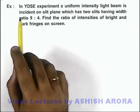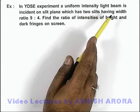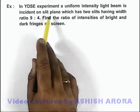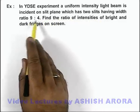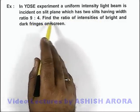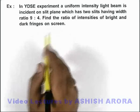In this example, we are given that in YDSE experiment a uniform intensity light beam is incident on a slit plane which has two slits having width ratio 9:4. We are required to find the ratio of intensities of bright and dark fringes on screen.